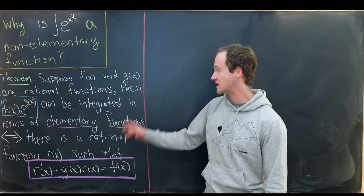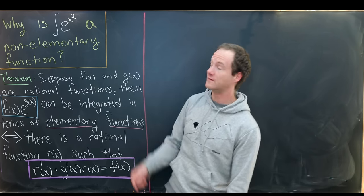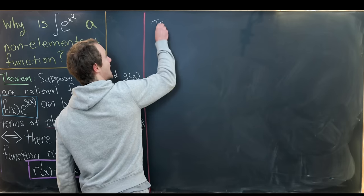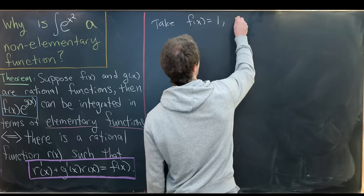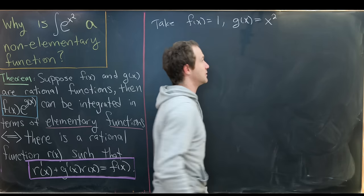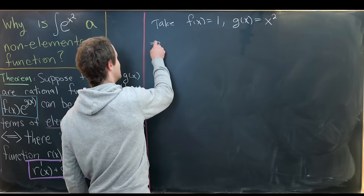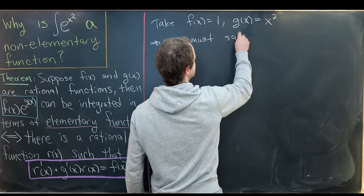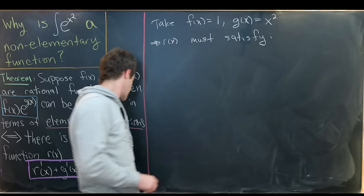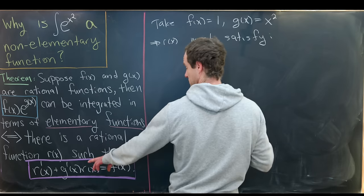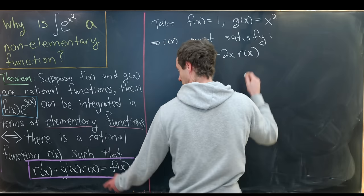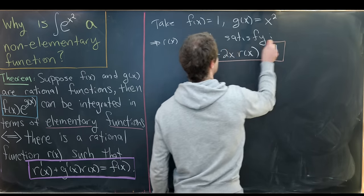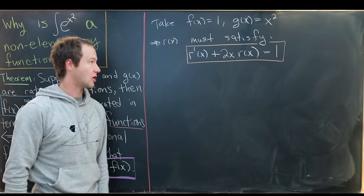We will use this result to prove that the antiderivative of e to the x squared is not elementary. To apply this theorem, we take f(x) equal to the constant function 1, and g(x) equal to the polynomial x squared. So our rational function r(x) must satisfy the first order linear differential equation: r prime of x plus 2x times r(x) equals 1. That gives us a fairly simple ODE that r(x) must satisfy.